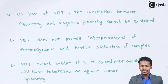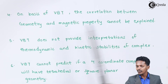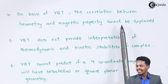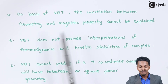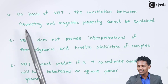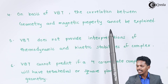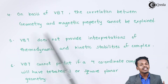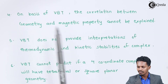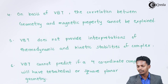Talking about the next point: on the basis of valence bond theory, the correlation between the geometry and magnetic property cannot be explained. That is a biggest drawback, because we can understand geometry, but to understand the magnetic property, there is no correlation between the geometry and the magnetic property that could be explained with the help of valence bond theory.